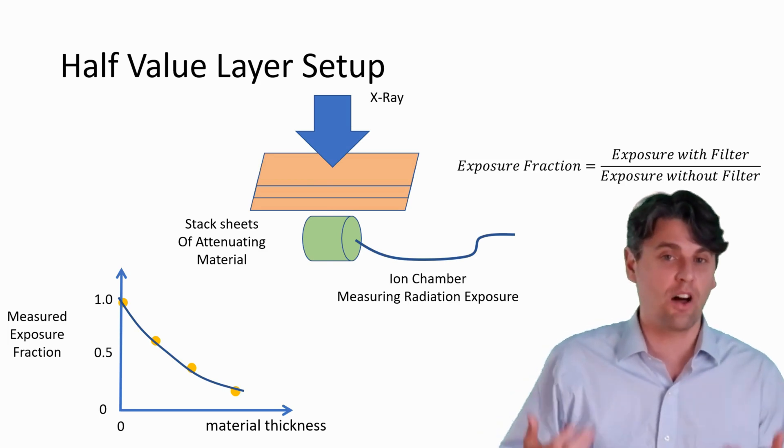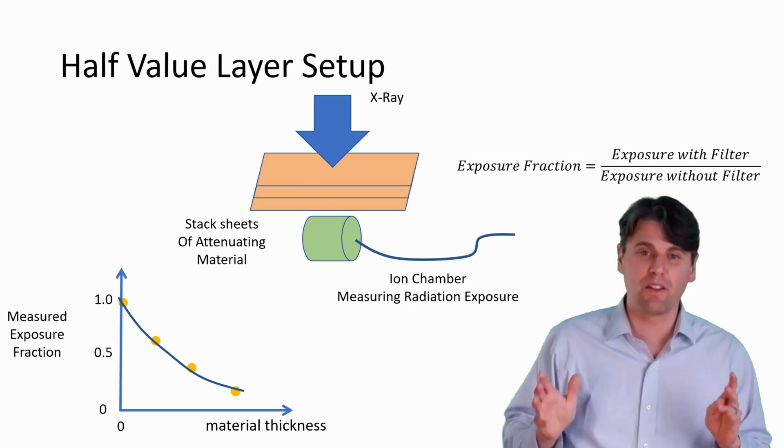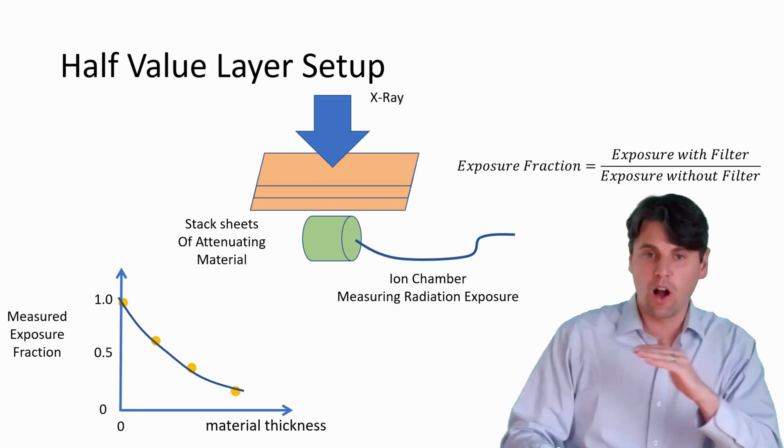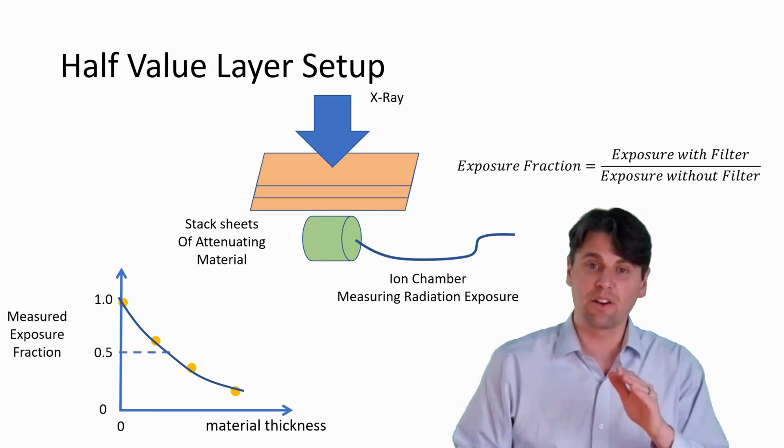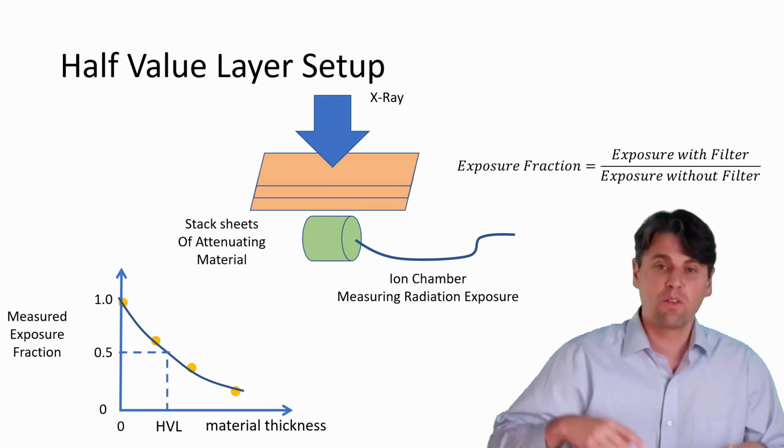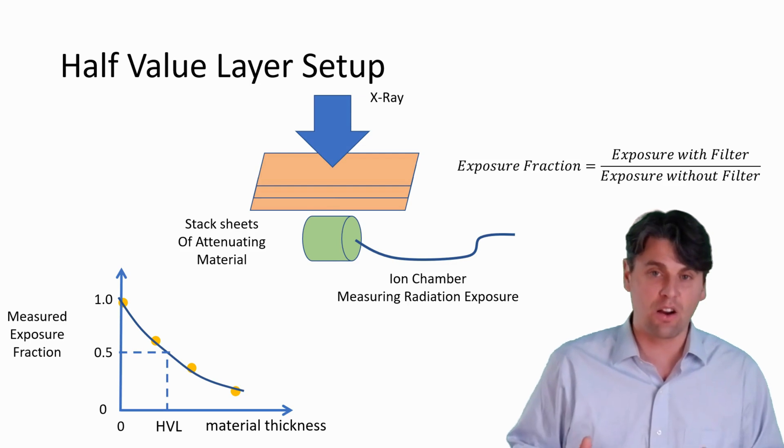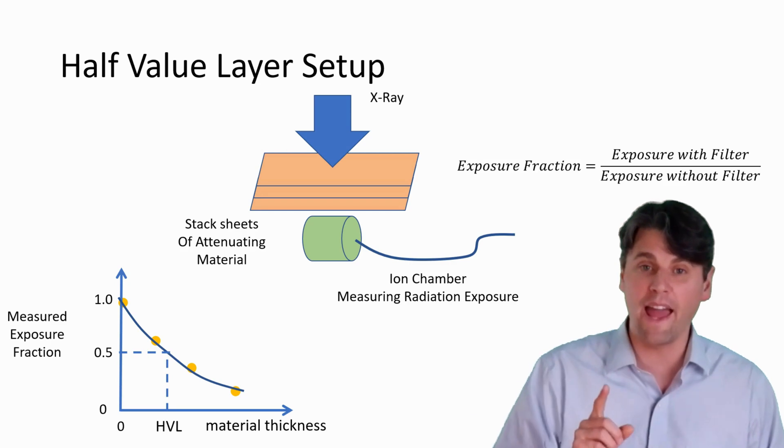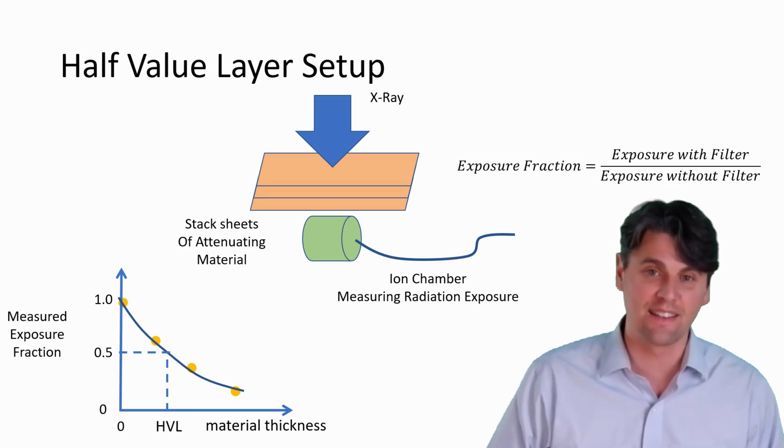We can fit that curve and then we can calculate parameters on that curve. The most popular one is called the half value layer. Go to where the value is one half of the original exposure. We'll draw a line, see where that line intersects our curve, and then we'll draw another line down. Draw that line down, we get what's called the half value layer. So that's the thickness of material that's required to attenuate one half of the x-rays.